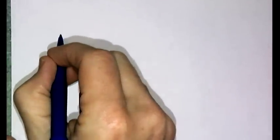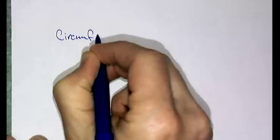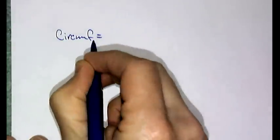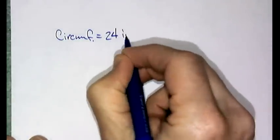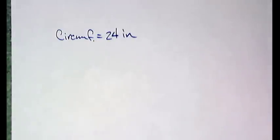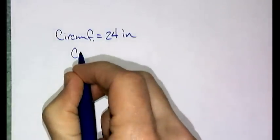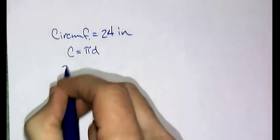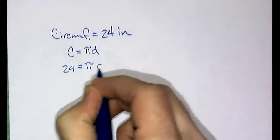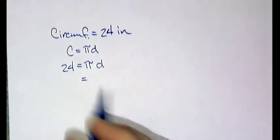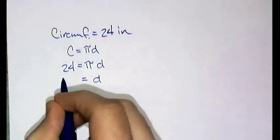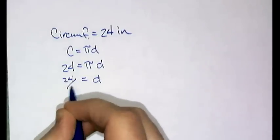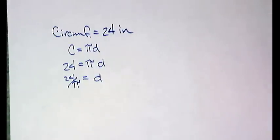Let's do a problem. If I tell you the circumference of a circle is equal to 24 inches, we know that circumference is equal to πD. And we can say that 24 is equal to πD. So the diameter would be equal to 24 divided by π.